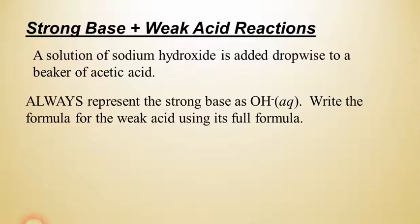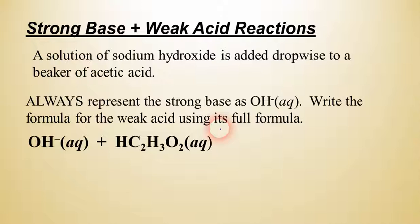Whenever you're doing that, you always want to represent the strong base as hydroxide, and anything else that that hydroxide is attached to, like sodium in this case, is going to be a spectator ion. And you're going to add that to the weak acid, and you'll write out that formula using its full formula. So acetic acid, as we know, is going to be HC₂H₃O₂, and then we'll add hydroxide to that in its ion form.